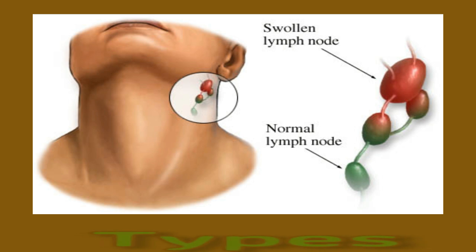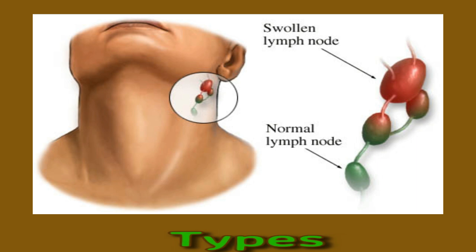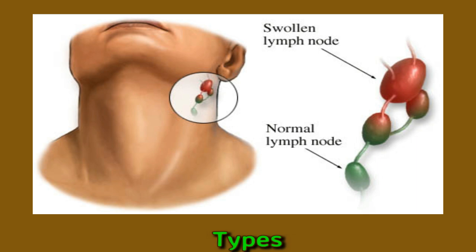Lymphadenitis may be bilateral, affecting lymph nodes on either side of the body — it may cause lymph nodes on either side of the neck to swell. It may also be unilateral, affecting a single lymph node. There are lymph nodes throughout the body: neck, abdomen, chest, armpits, and groin. A person is more likely to develop lymphadenitis during or following an infection in a nearby area. For example, an ear infection or strep throat may lead to lymphadenitis.